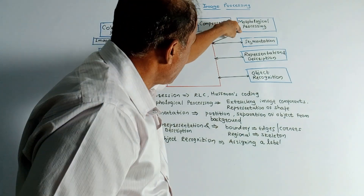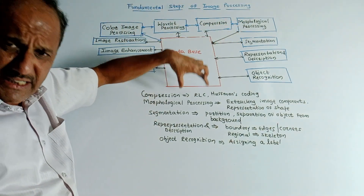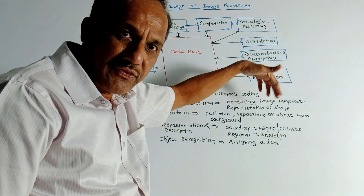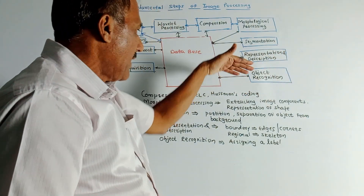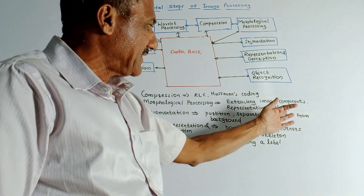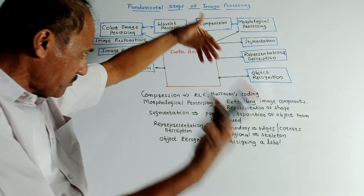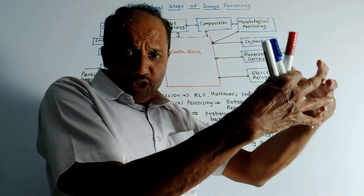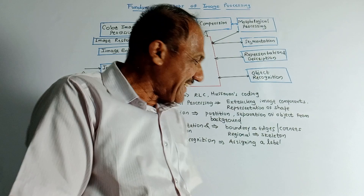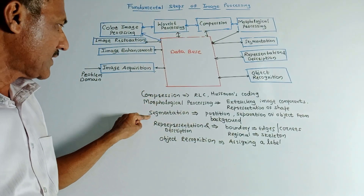The next block is morphological image processing. This block is used to extract different image components that are responsible for representing the shape of an image. You extract different image components from the image and perform processing on them. For that, morphological image processing is used.